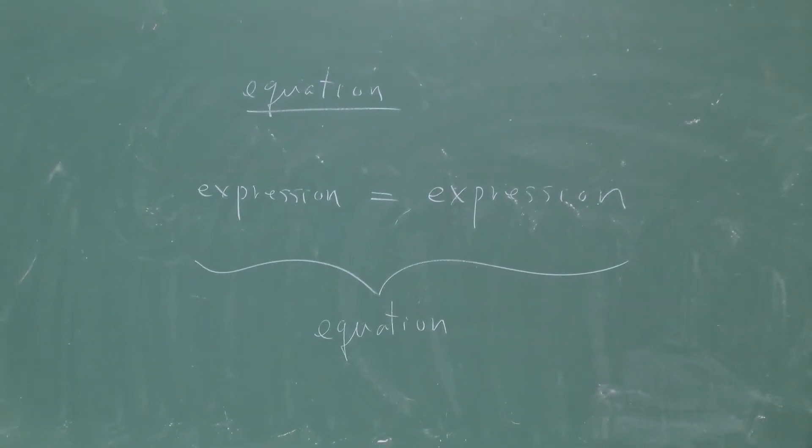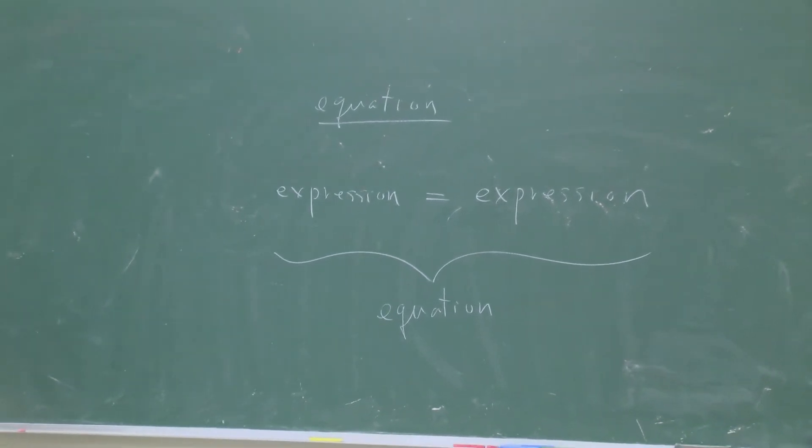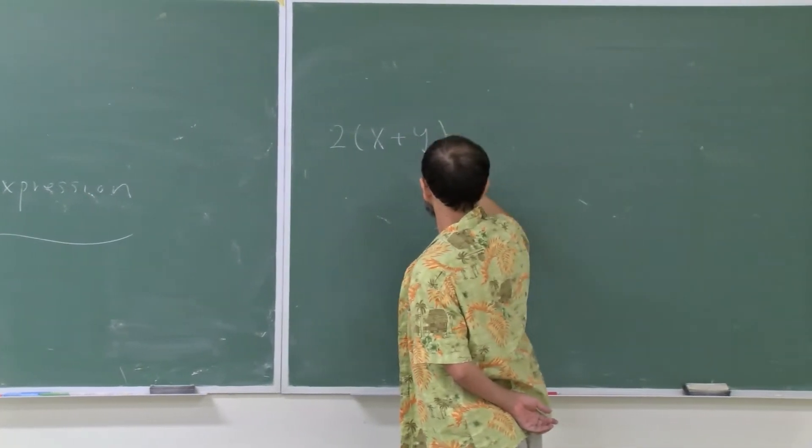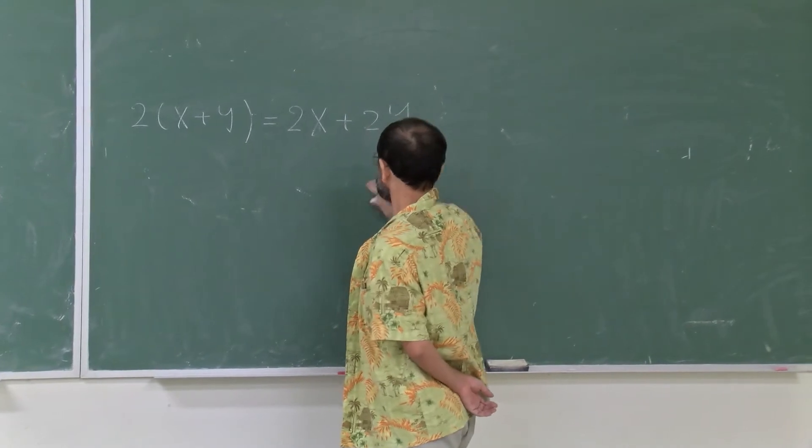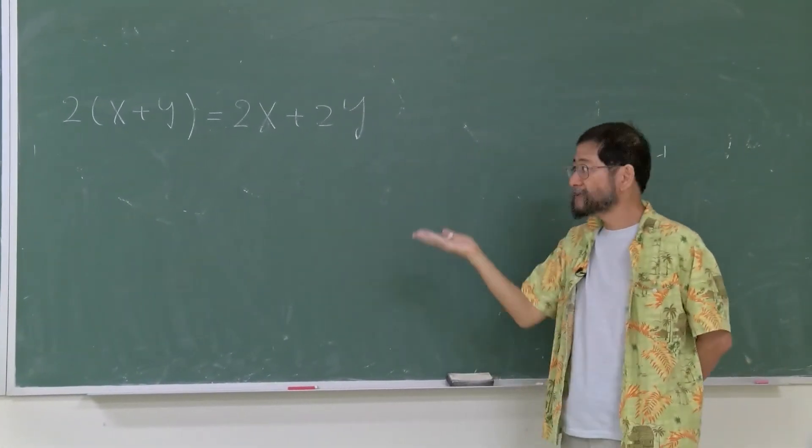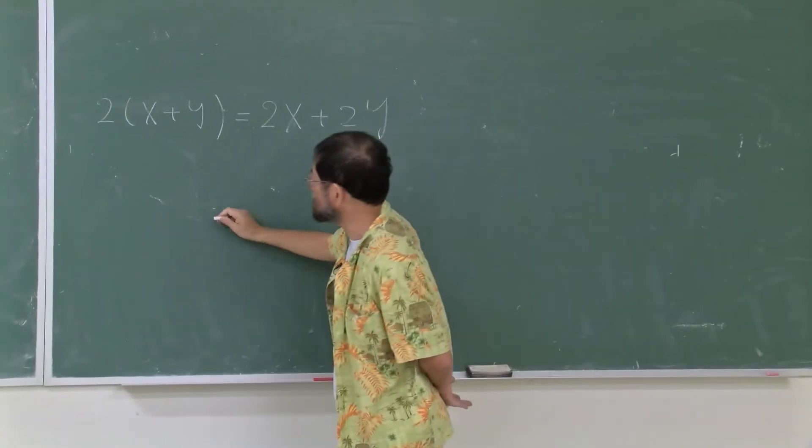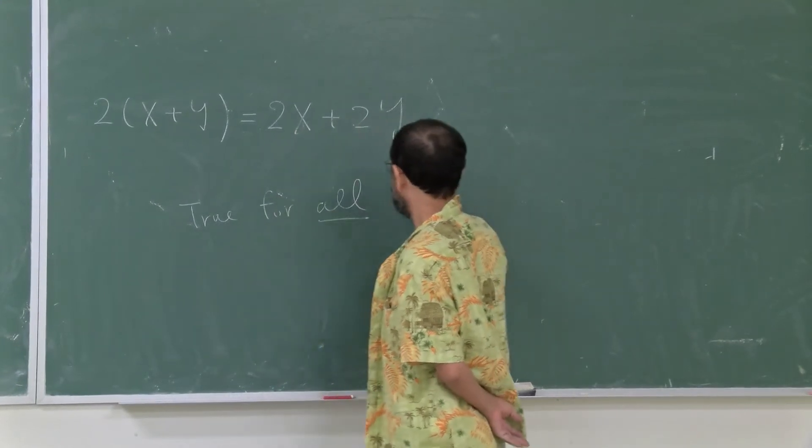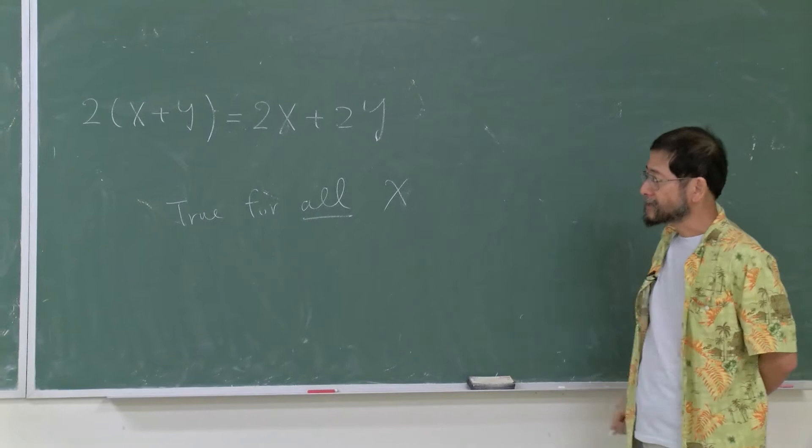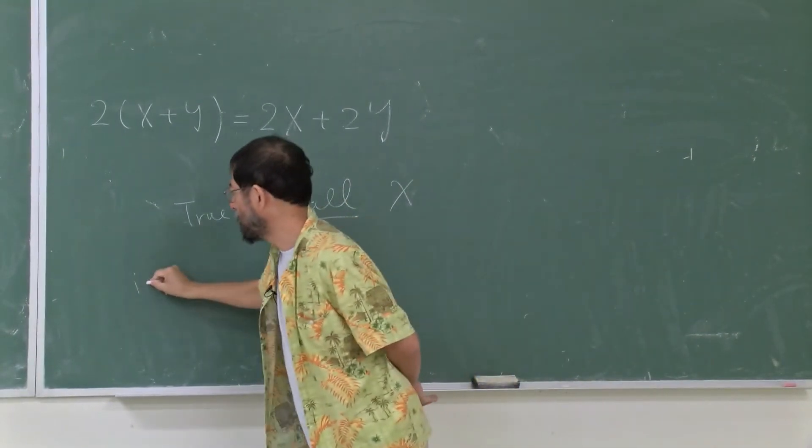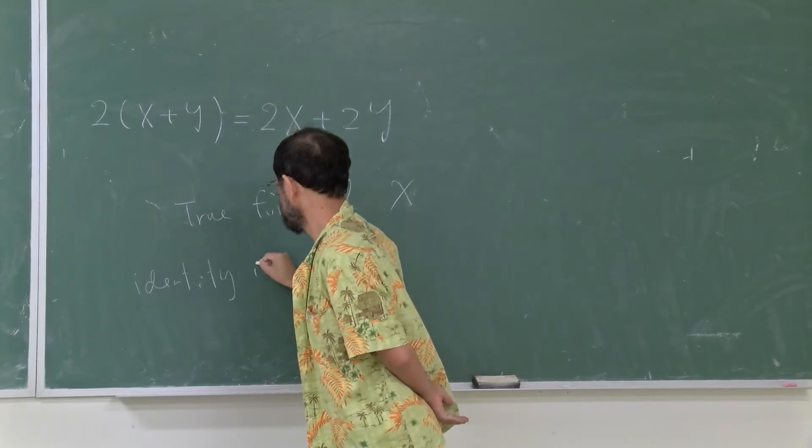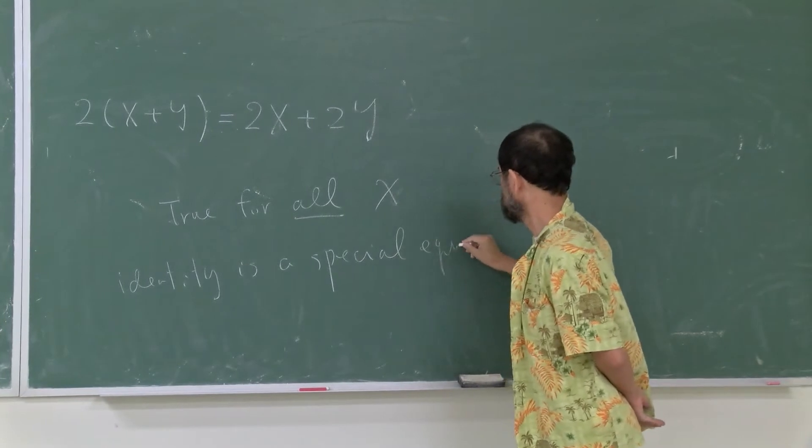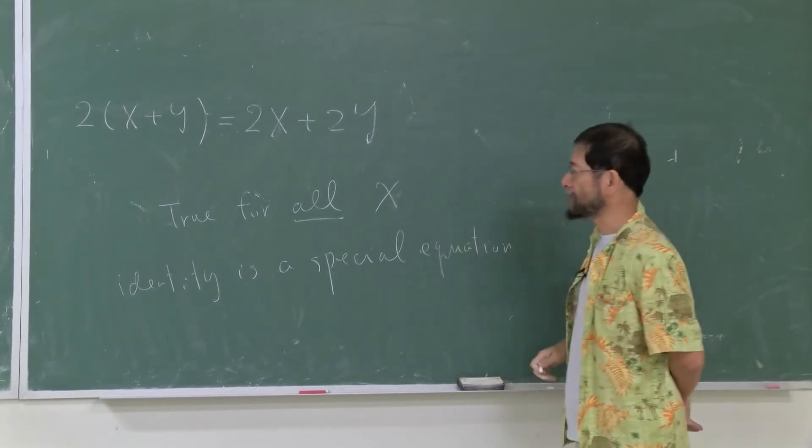So for example, we already discussed the identity last time. 2 times (x+y) is equal to 2x plus 2y. All right, so this is an equation. But what is special about this is this is equal, is true for all x. This case is, we say, it's identity. So identity is a special kind of equation which is true for all x.